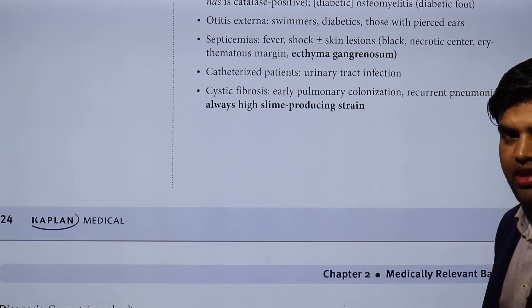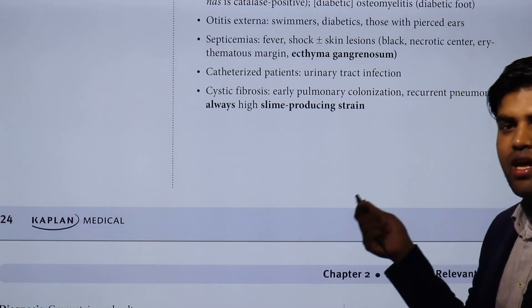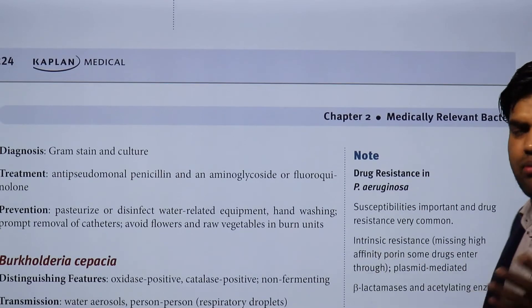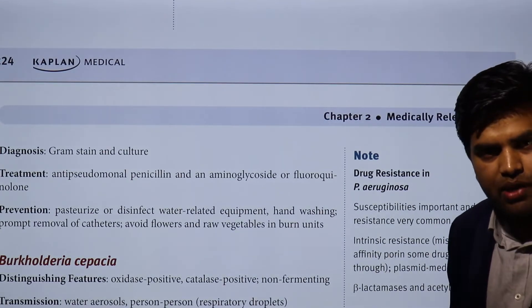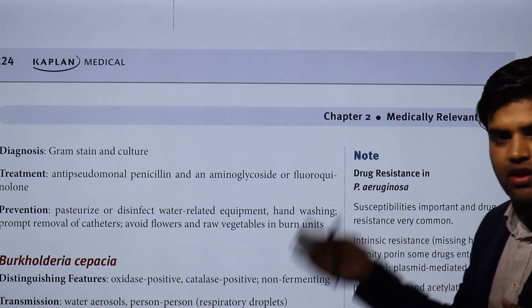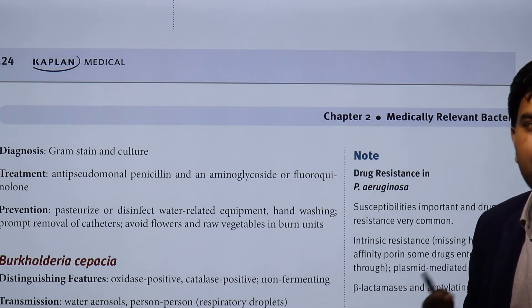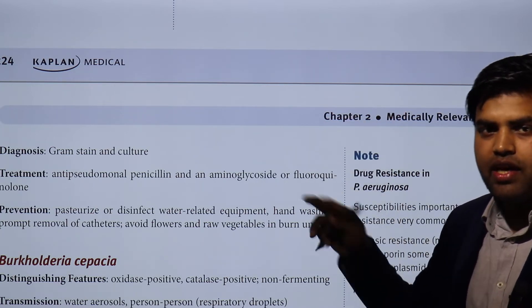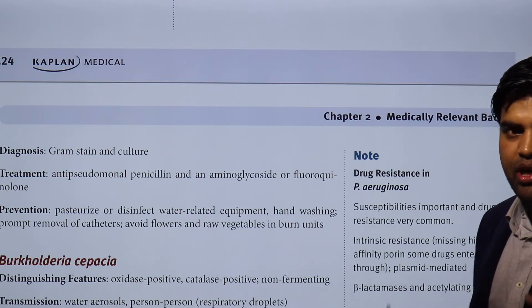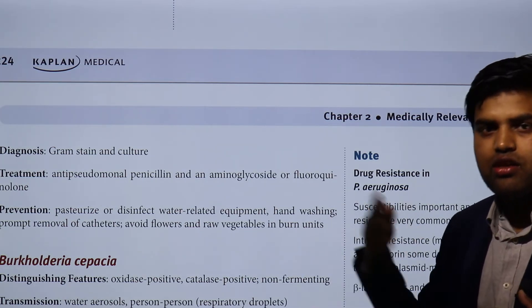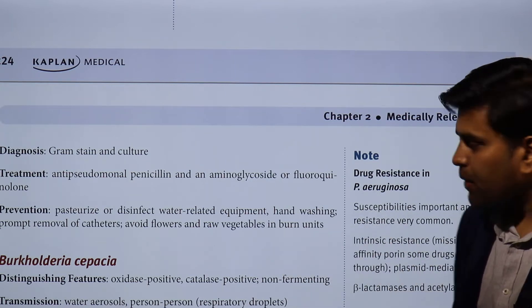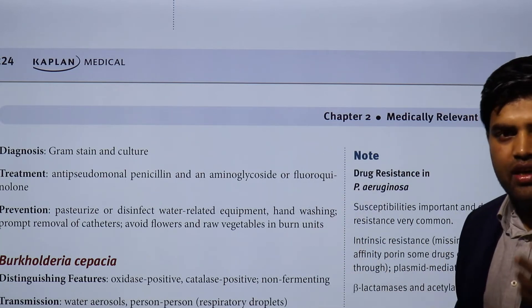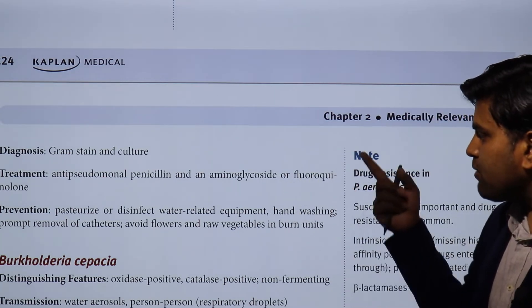Catheterized patients can develop urinary tract infections. Cystic fibrosis patients may develop early pulmonary colonization and recurrent pneumonia, particularly from high slime-producing strains. Diagnosis is made by Gram stain revealing gram-negative rods, followed by culture on MacConkey agar where non-fermenting pale colonies form. They may also produce visible green pigment. Biochemical testing including oxidase test confirms identification. The organism can also grow on blood agar, but MacConkey agar is preferred for identification.